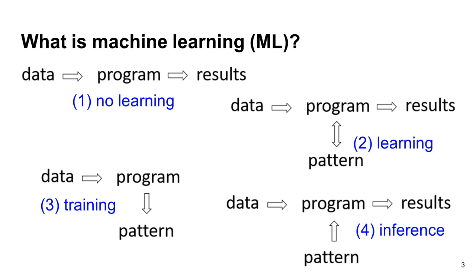In many cases, this scenario is actually divided into two different steps. The first step is called learning — the programs discover the patterns in the data. The second step is called inference — the programs use the discovered patterns to process the data and produce output. It is possible that the learning and inference steps use different programs.